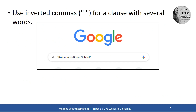The next tip is: if you want to use many words in your search, it is better to include them within inverted commas. For example, if you want to search about historical places in Sri Lanka, include that phrase within inverted commas to make your search more efficient.